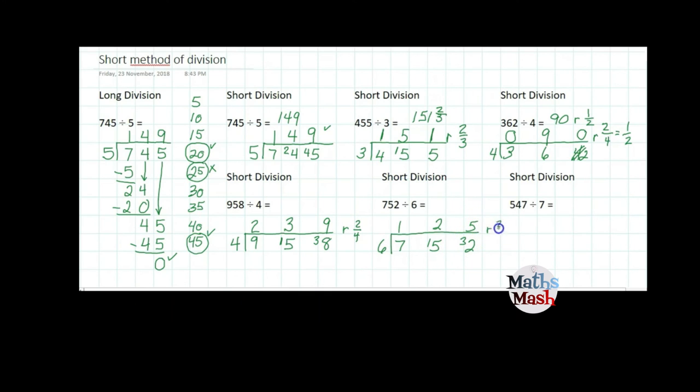How many in 32? That's 5 and 2 sixths as a remainder. But we simplify that to 1 third.